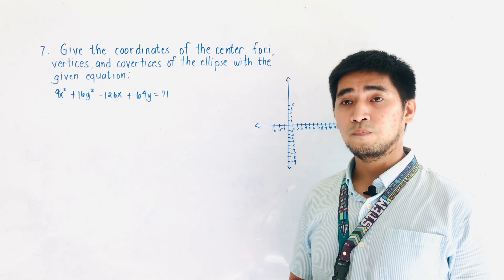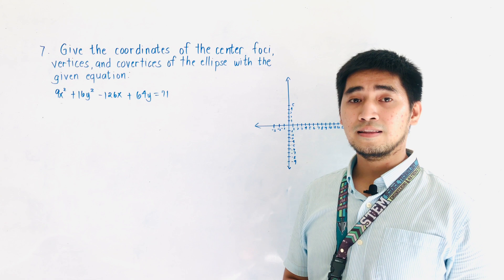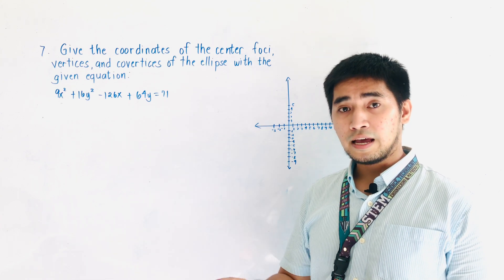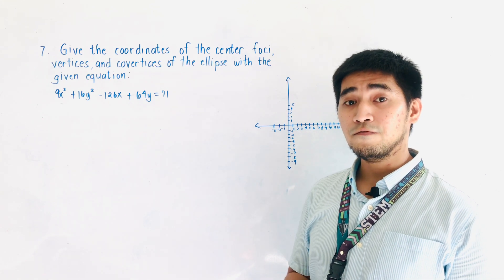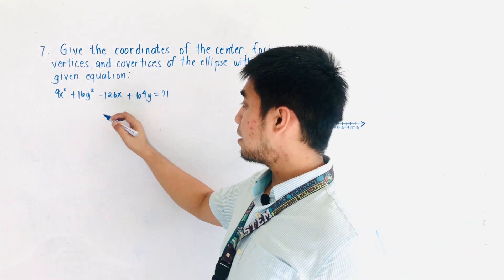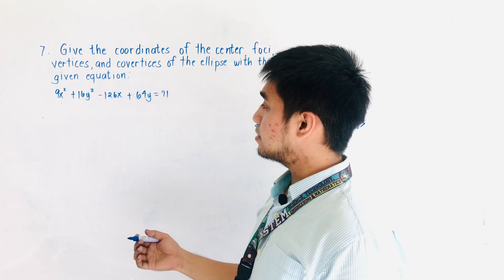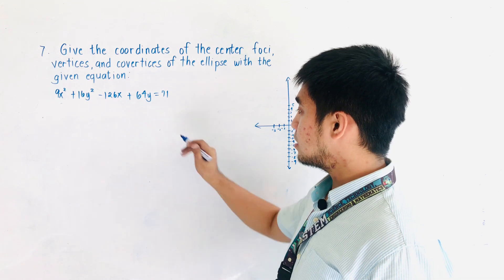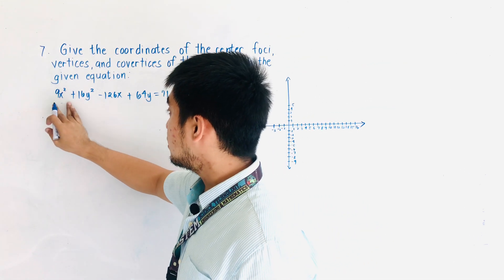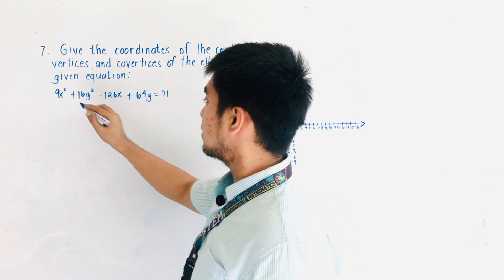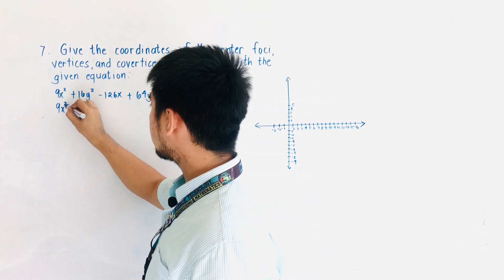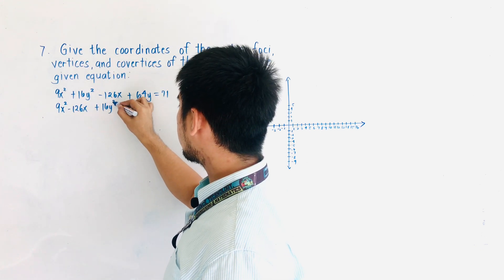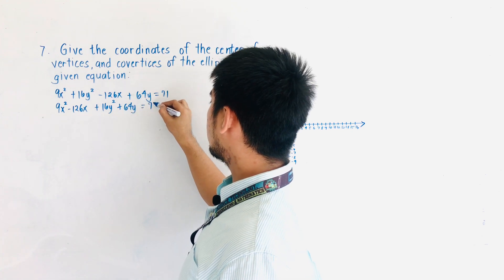I am very confident that you will be able to answer this problem through completing the square, because I have already discussed it in some of my videos. So given 9x² + 16y² - 126x + 64y = 71, all we have to do is to group the terms in x and the terms in y. Therefore, we'll have 9x² - 126x + 16y² + 64y = 71.